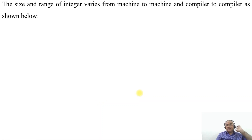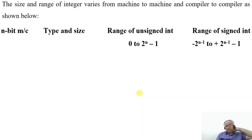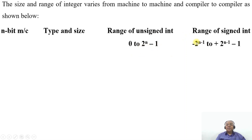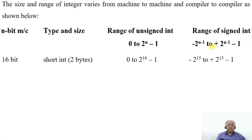The size and range of the integer varies from machine to machine and compiler to compiler. For an n-bit machine, the range of unsigned int is 0 to 2 to the power of n minus 1, and the range of signed int will be minus 2 to the power of n minus 1 to plus 2 to the power of n minus 1, minus 1.